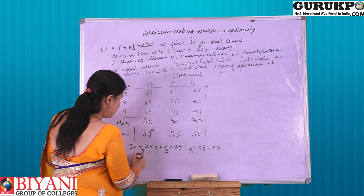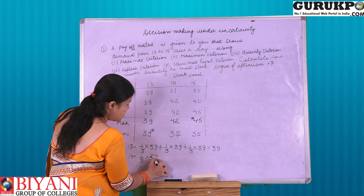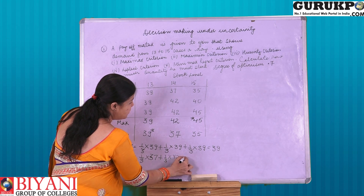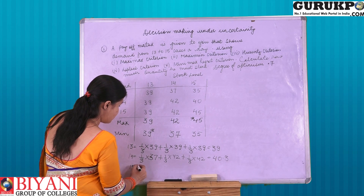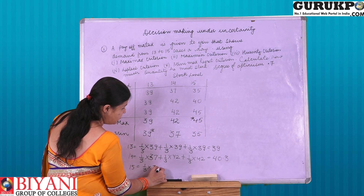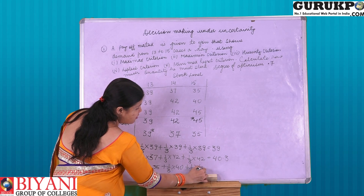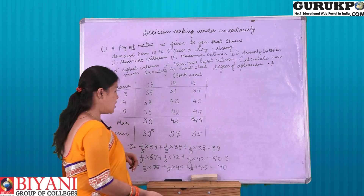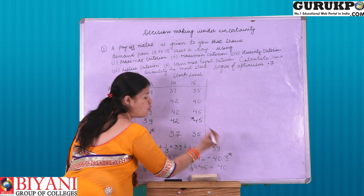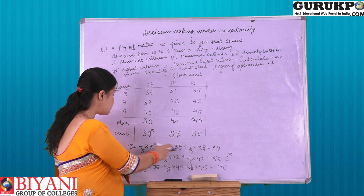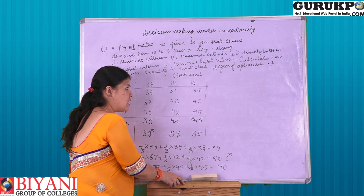For 13 stock level, that comes to 39. For 14 stock level, with equal weight 1/3 assigned: 1/3 × 37 + 1/3 × 42 + 1/3 × 42, that is 40.3. For 15 stock level: 1/3 × 35 + 1/3 × 40 + 1/3 × 45, it comes to 40. After calculating, the maximum value is 40.30, so as per Laplace criteria, the decision maker would like to stock 14 units.